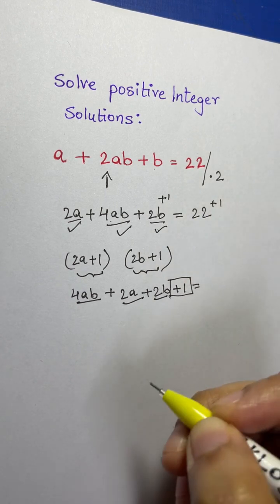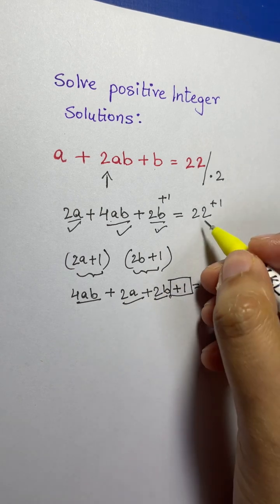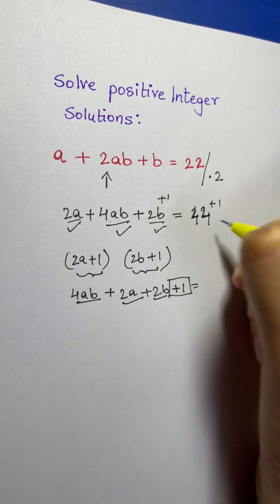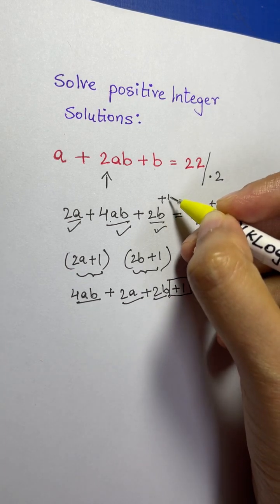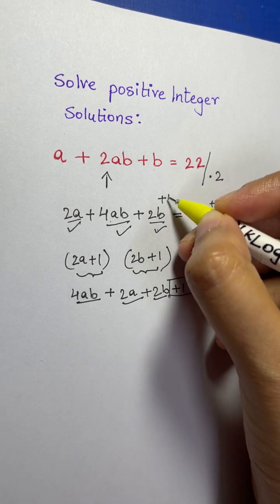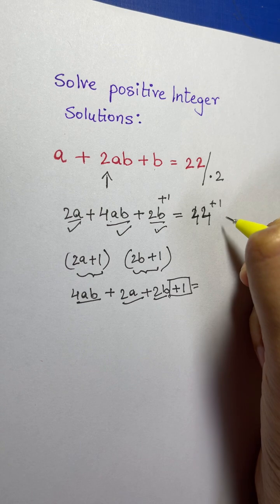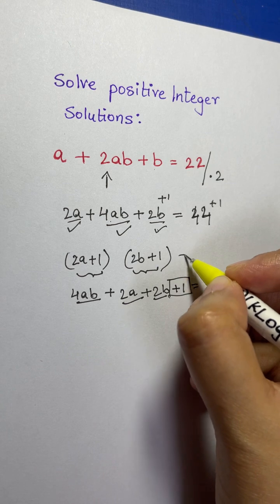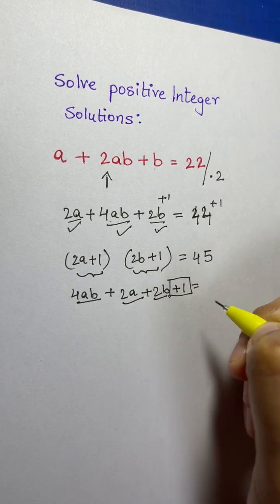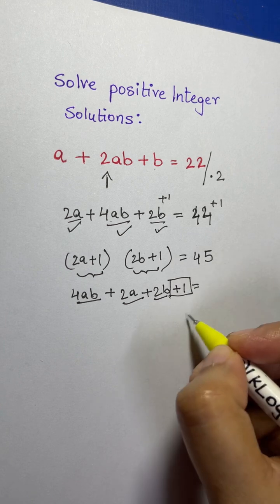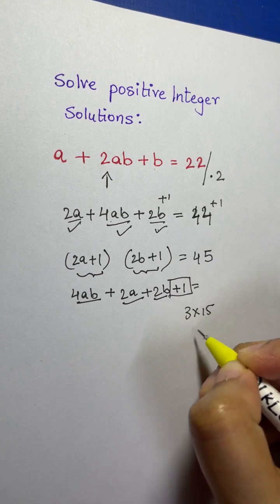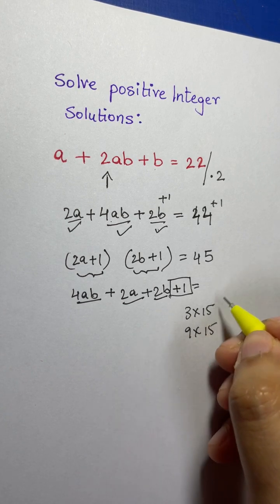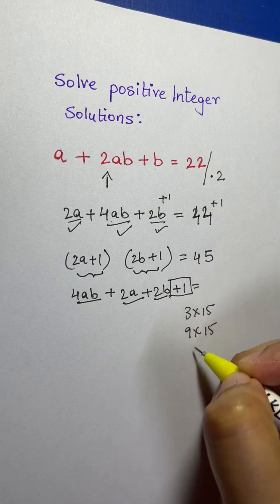Adding +1 to both sides: on the right we had 44 (since we multiplied by 2 earlier), so 44 + 1 = 45. Therefore (2a + 1)(2b + 1) = 45. The factor pairs of 45 are: 3 × 15, 15 × 3, 5 × 9, and 9 × 5 — giving us four factor pairs.